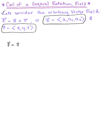Our vector field is defined by the cross product of vector a and vector r. We'll put this into a 3×3 matrix and take the determinant. The first row is the standard unit vectors, the second row is the components of a, and the third row is the components of vector r.